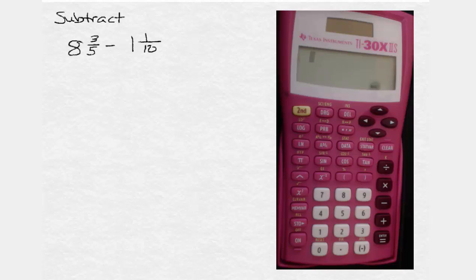And normally, to do that by hand, what we would do is one of two things. Either we would do a vertical subtraction, writing 8 and 3 fifths above 1 and 1 tenths, then find a common denominator for 3 fifths and 1 tenths, which would give us 10.